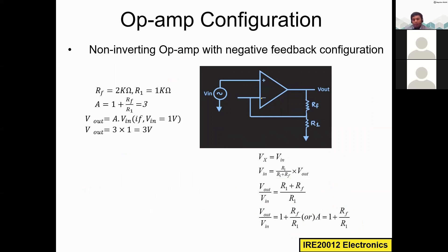Let's apply some numbers to make this clearer. Setting Rf = 2 kΩ and R1 = 1 kΩ: A = 1 + (2/1) = 1 + 2 = 3. The output voltage is A × Vin. Assuming Vin = 1 V, the output is 3 × 1 = 3 V. Notice there is no minus sign, so there is no phase difference between input and output.